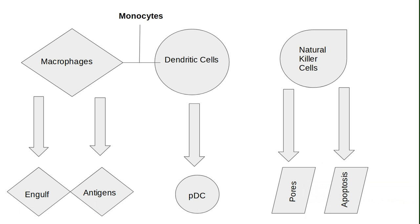Natural killer cells lack antigen-specific receptors. They function via cell-to-cell contact, during which they detect the missing self-antigen on the target cell, known as the killer cell inhibitory receptor. Without that killer cell inhibitory receptor signal, the natural killer cell will be activated.